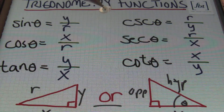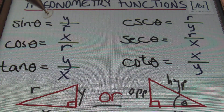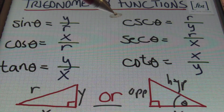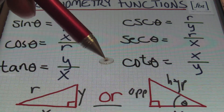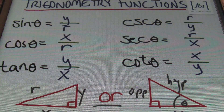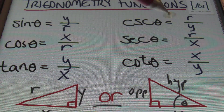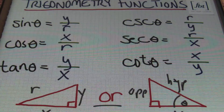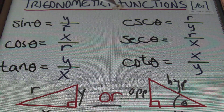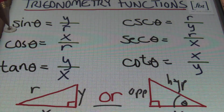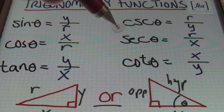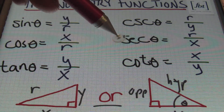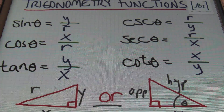Then we have the reciprocal of the first three trig functions I just talked about, and that is cosecant, secant, and cotangent. So sine theta is the reciprocal of cosecant, cosine is the reciprocal of secant, and tangent is the reciprocal of cotangent, and vice versa.